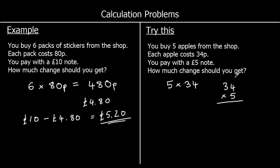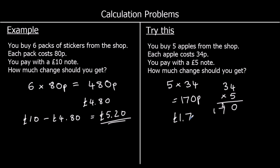So we do five times four, which is 20. So zero in the ones, carry two over into the tens. Five threes are 15, plus the two is 17. So that's 170, or 170p, which is £1.70.